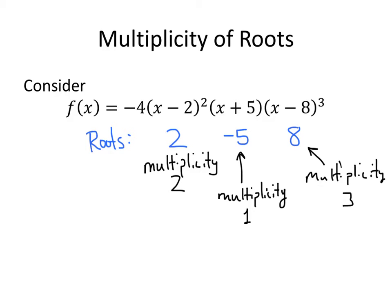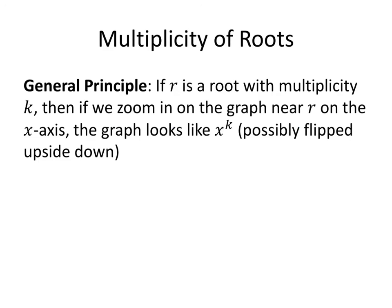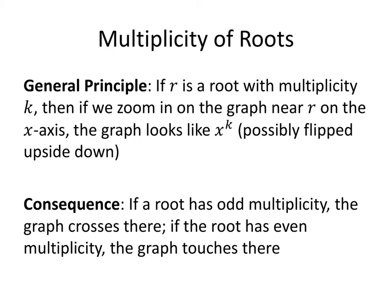So how does the multiplicity affect the shape of the graph? The general principle is that if r is a root with multiplicity k, then when we zoom in on the graph near r on the x-axis, the graph looks like the power function x to the k at that point — maybe flipped upside down, but the same general shape. So a root of multiplicity 2 looks like a parabola there; a root of multiplicity 1 looks like a line there. The consequence is that if a root has odd multiplicity, the graph crosses the x-axis at that root. If the root has even multiplicity, the graph just touches the axis there.